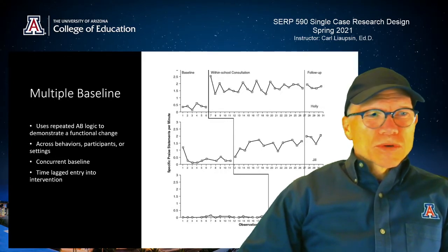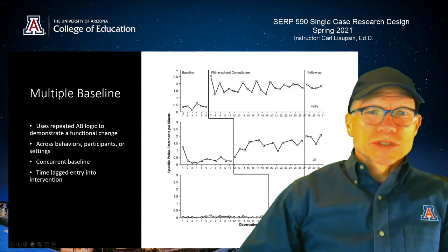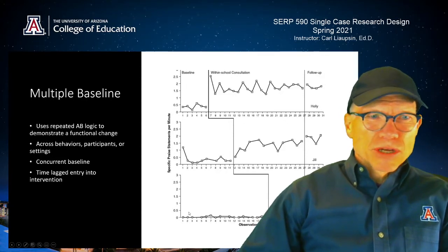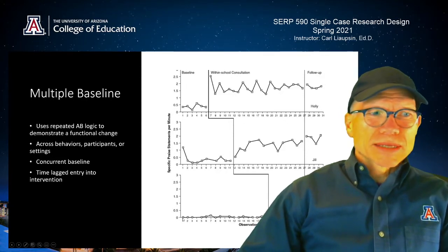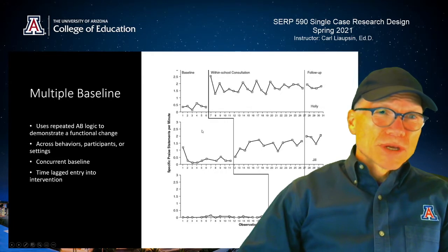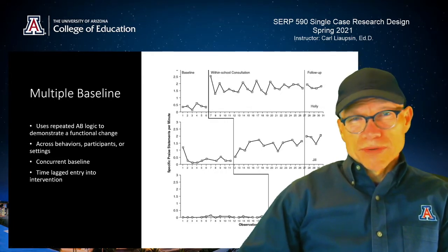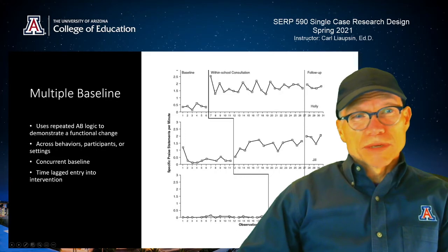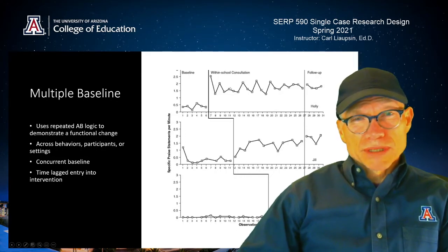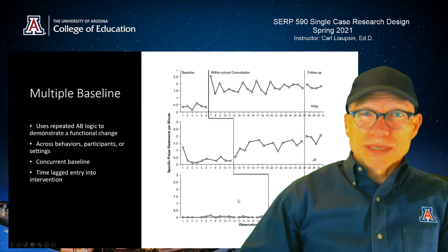There are also concurrent baselines here. These baselines — we started all these people at the same time, we collected behavior for them continuously, and there's time-lagged entry into interventions. So we implemented with Holly first, showed an effect, and waited until we saw an effect. Then we implement with Jill, and then we implement with Kim.